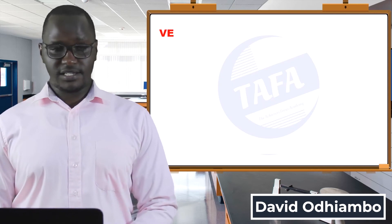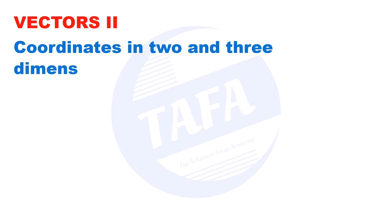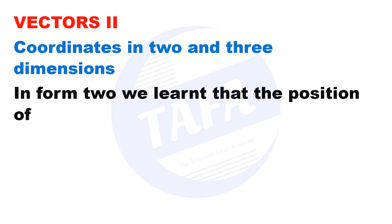The topic today is Vectors 2. Now we are going to look at coordinates in two dimensions and in three dimensions. In Form 2 we learned that the position of a point in the Cartesian plane is specified by the ordered pair (a, b).